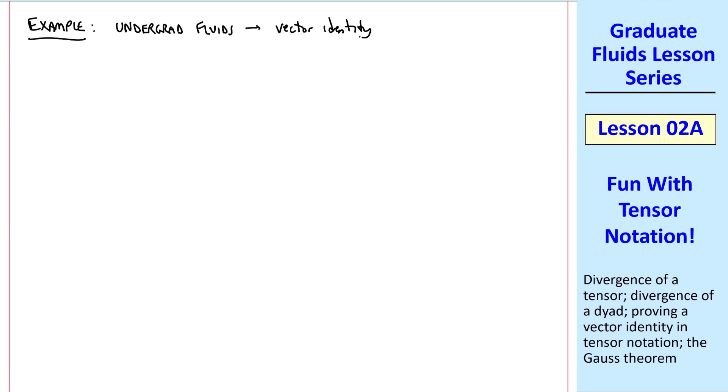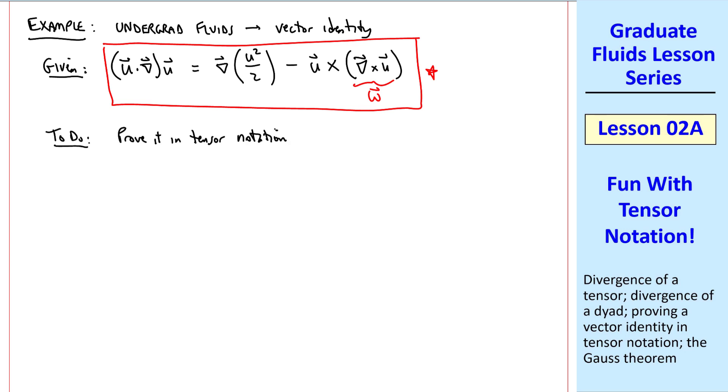Let's do an example. You may remember or not remember this vector identity that we used when deriving the Bernoulli equation. u dot del u equal del of u squared over 2 minus u cross del cross u, which, by the way, is the vorticity vector omega. For an irrotational flow, this term goes to 0, and that's why you get the magnitude of velocity squared over 2 term in the Bernoulli equation. Let's take this vector identity as our given. Let's prove it in tensor notation.